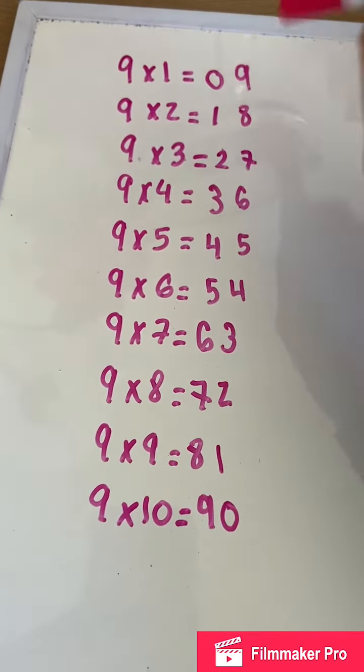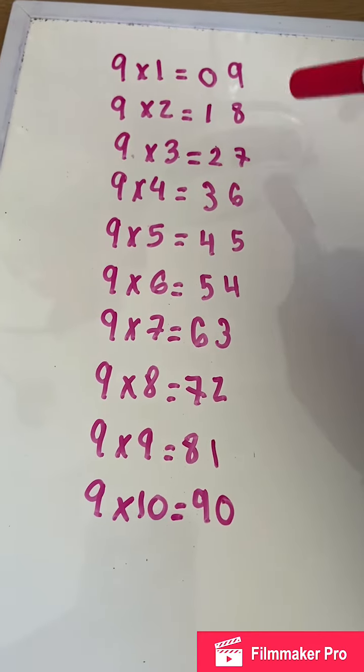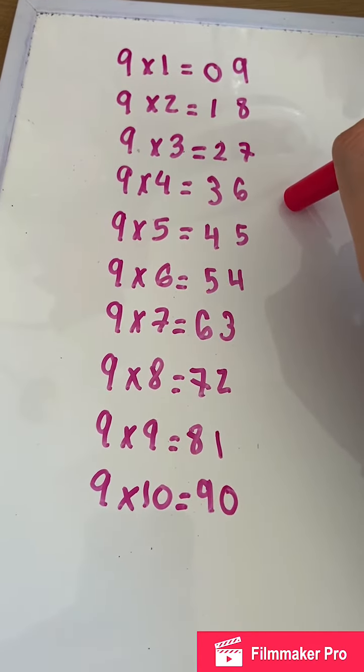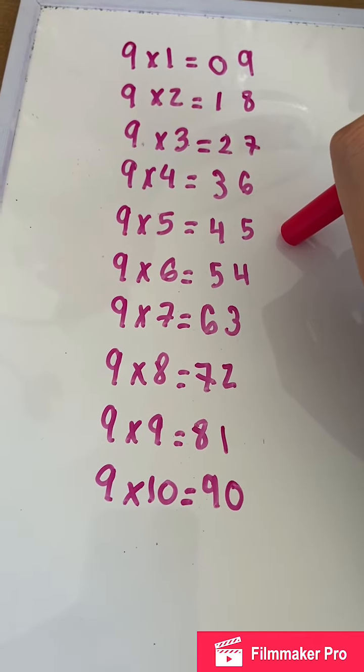Nine times one is nine. Nine times two is 18. Nine times three is 27. Nine times four is 36. Nine times five is 45.